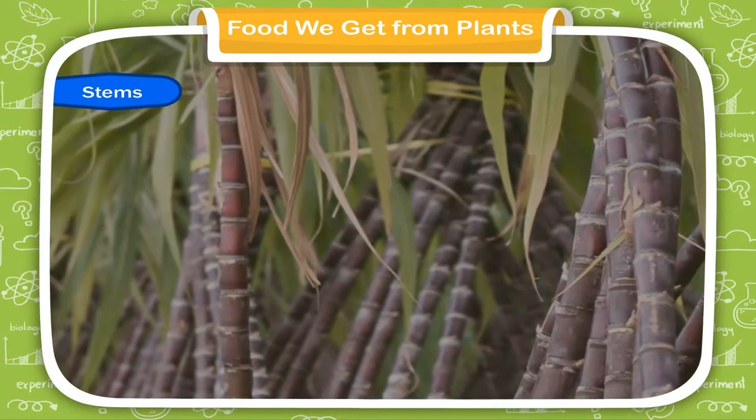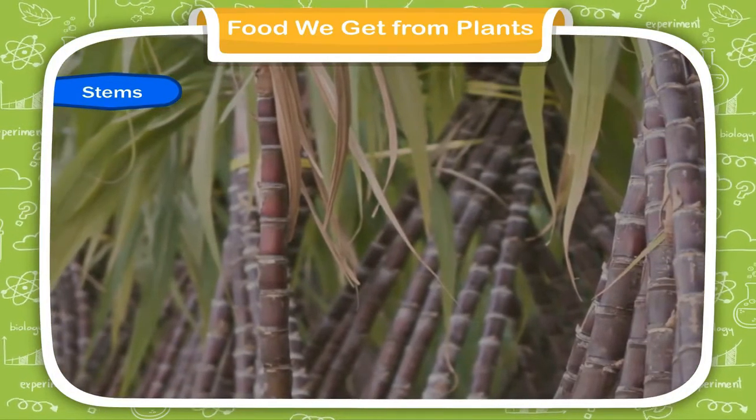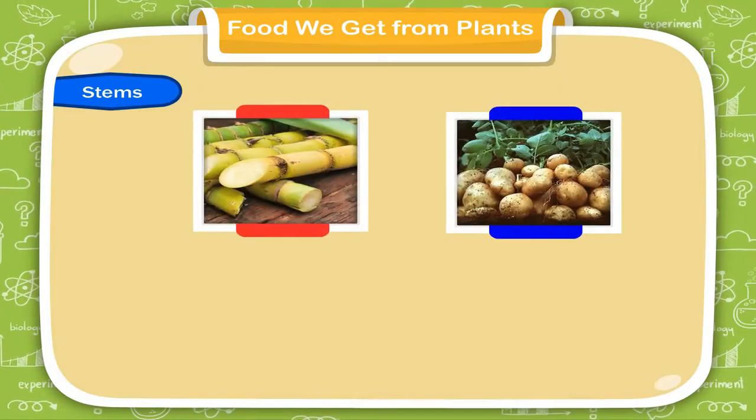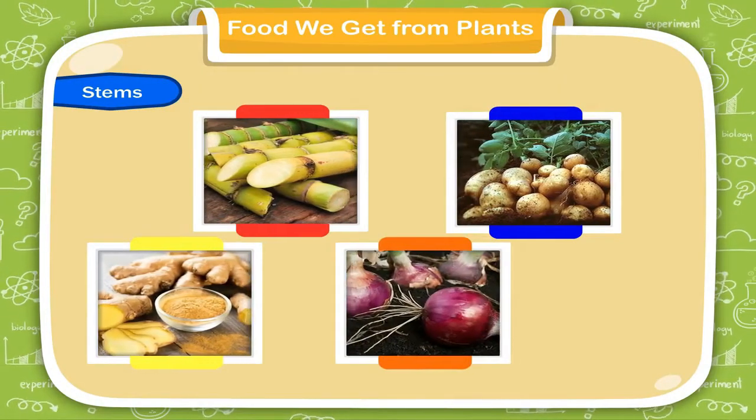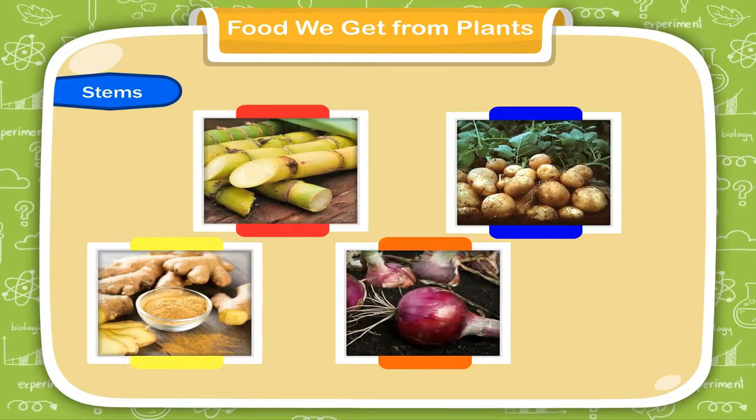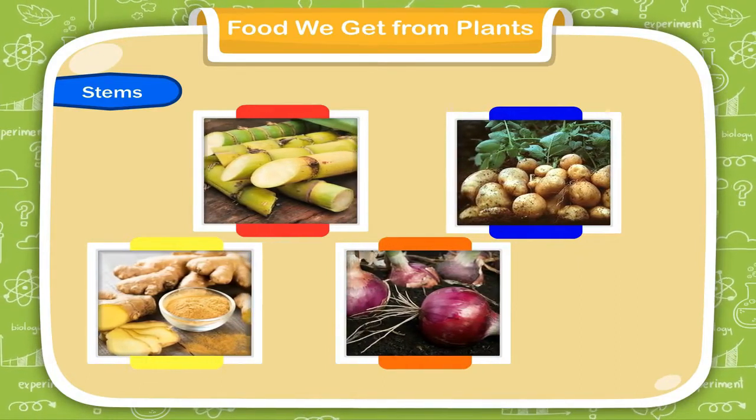Stems: We eat the stems of plants, such as sugarcane, potato, ginger, onion, etc. The sugar that we use is obtained from sugarcane.